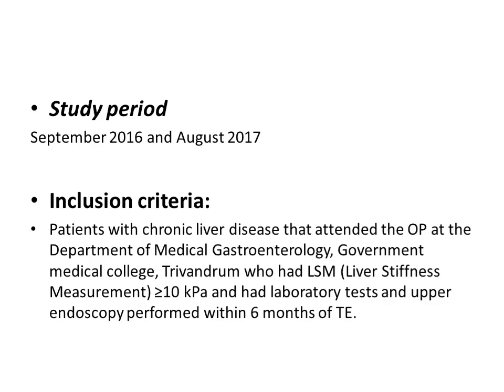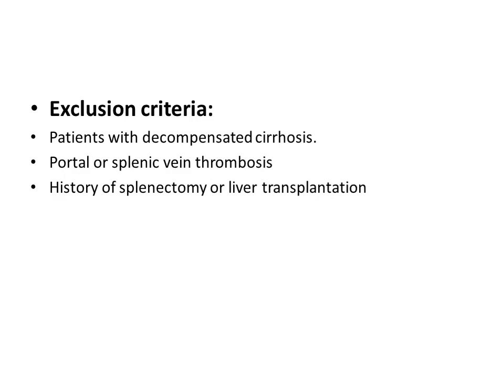The probability of having compensated alcoholic liver disease is very low if the liver stiffness measurement is less than 10 kPa, and Bavino 6 also mentions that patients with liver stiffness measurement between 10 and 15 kPa are likely to have compensated alcoholic chronic liver disease. This study excluded patients with decompensated cirrhosis — meaning those presenting with ascites, jaundice, or hepatic encephalopathy — and also excluded patients with portal or splenic vein thrombosis and a history of splenectomy or liver transplantation.